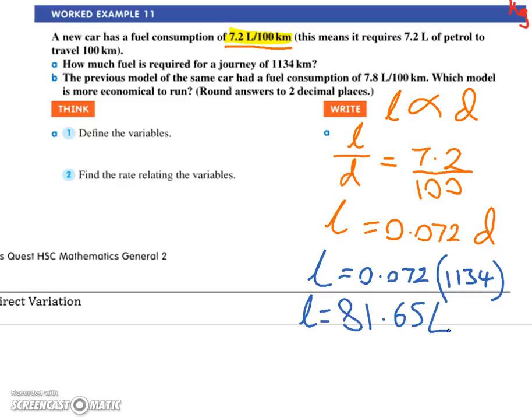All right. Now the next one tripped a few people up in the year 12s. I shouldn't say a few people, there's only four of them. It tripped up all of them. The previous model of the same car had a fuel consumption of 7.8 liters per 100 kilometers. Which model is more economical to run?